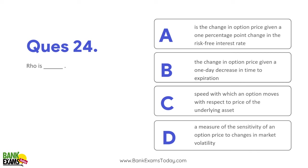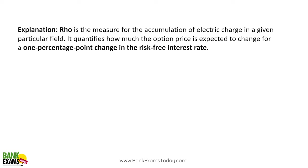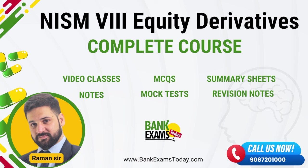RHO is the change in option price given a one percentage point change in the risk-free interest rate. It measures the impact of the risk-free interest rate on the option price.